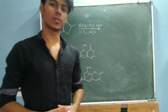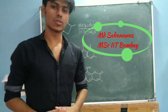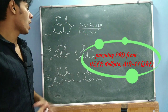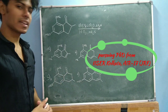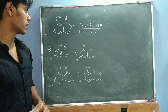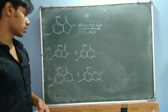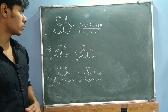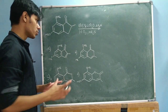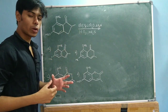Here is another revision question. The reaction involves two steps: the first step involves treatment with trifluoroacetic anhydride and triethylamine, and in the second step this is basically an ozonolysis reaction. You have to predict what will be the product, and the reaction is a little bit tricky.